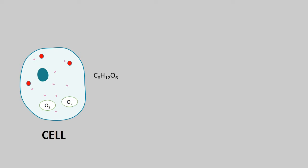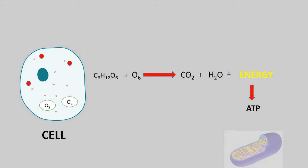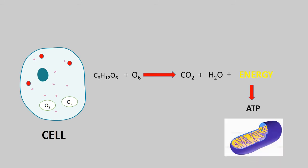In the breakdown of sugar, it produces carbon dioxide and water molecules along with energy release. The released energy is stored in the form of ATP in mitochondria. The released carbon dioxide passes out through the stomata.